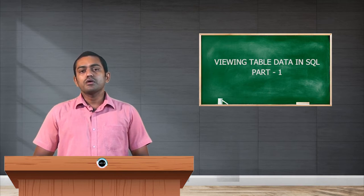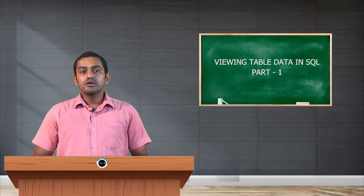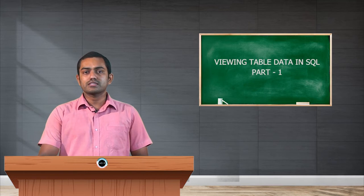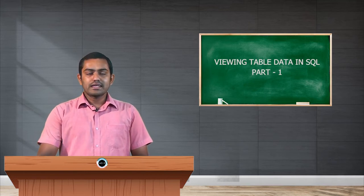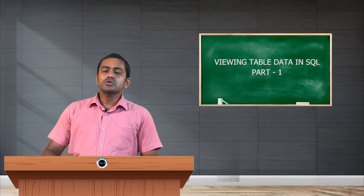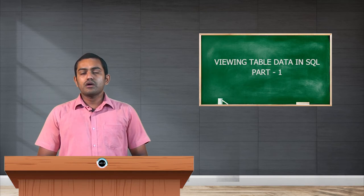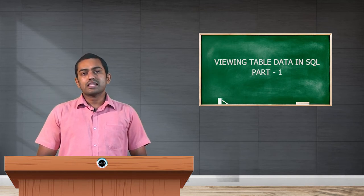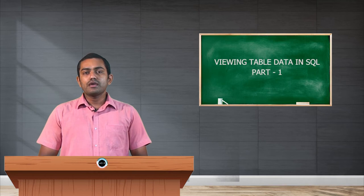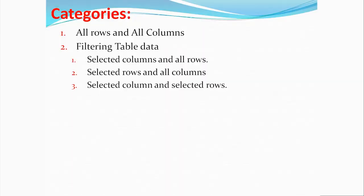Depending on how and what data we need to view, we classify the entire way of viewing data into two main categories: the first one is all rows and all columns, and the second one is filtering table data.